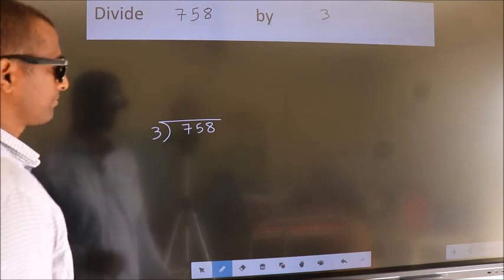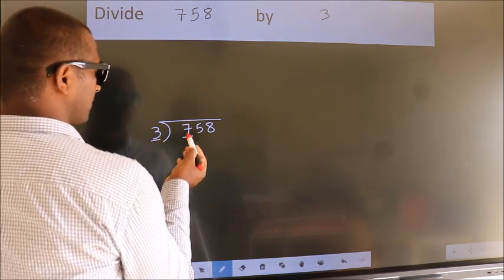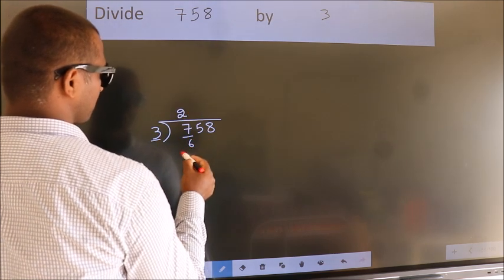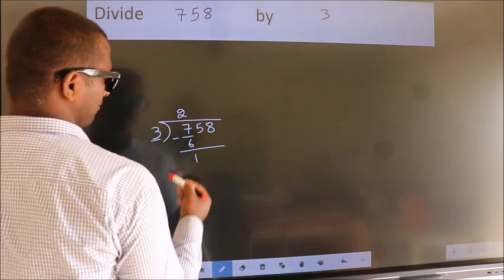Next, here we have 7, here 3. A number close to 7 in the 3 table is 3 times 2 equals 6. Now we should subtract. We get 1.